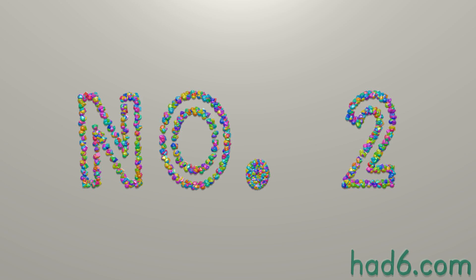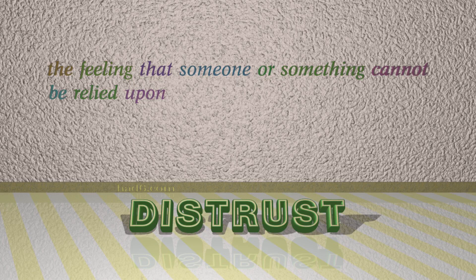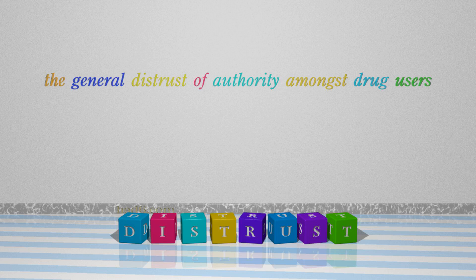Number 2: Distrust. Which means the feeling that someone or something cannot be relied upon. For example: The general distrust of authority amongst drug users.